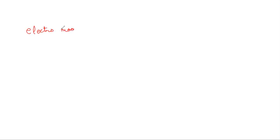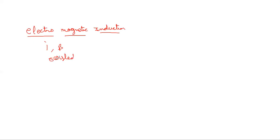The topic is Electromagnetic Induction. Earlier, people thought that current and magnetic field were different. Then, because of experiments done by Oersted, they came to know that there is some relation between current and magnetic field — that is, flow of current through a wire will give some magnetic field.